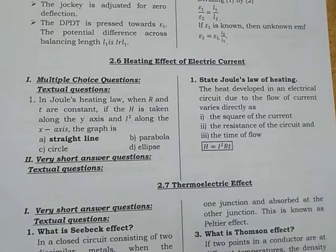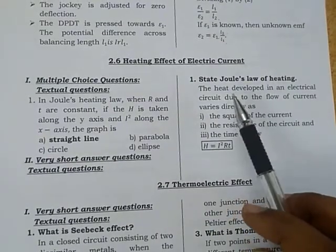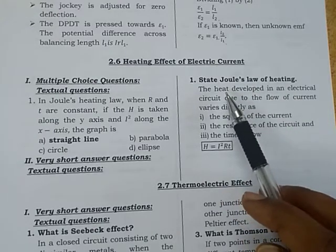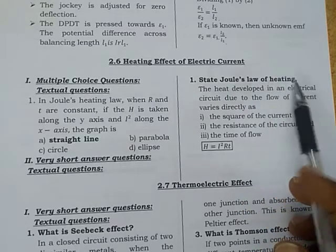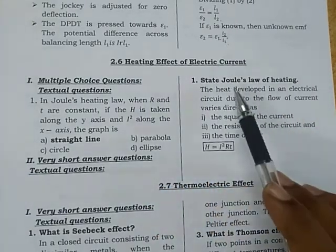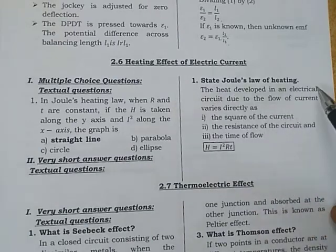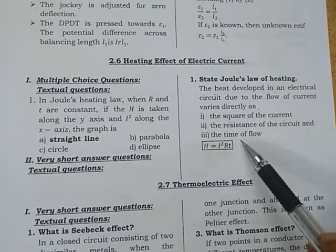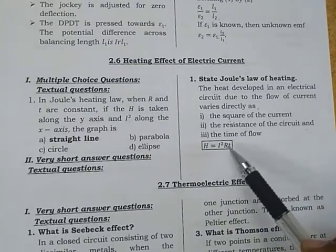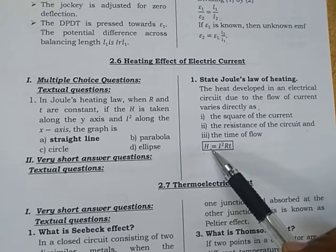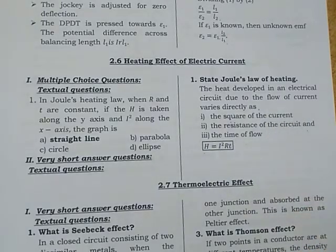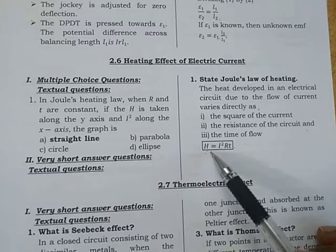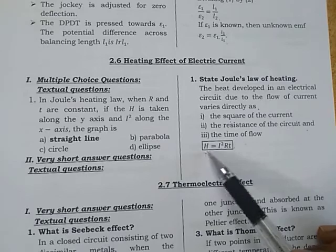Next topic: heating effect of electric current. There is one very short answer question — state Joule's heating law. When current flows through a conductor, it produces a heating effect. Joule's law states the heat H developed varies directly as the square of current, resistance of the conductor, and time of flow. H = I²RT.